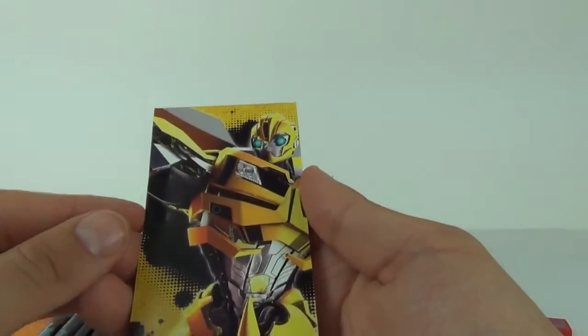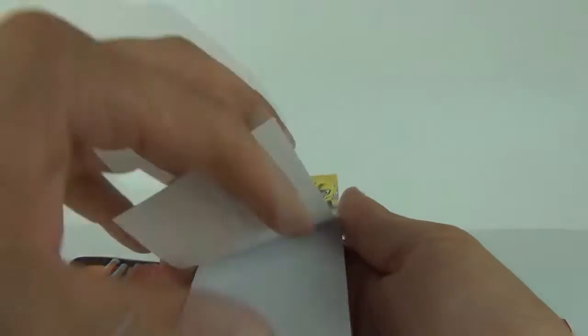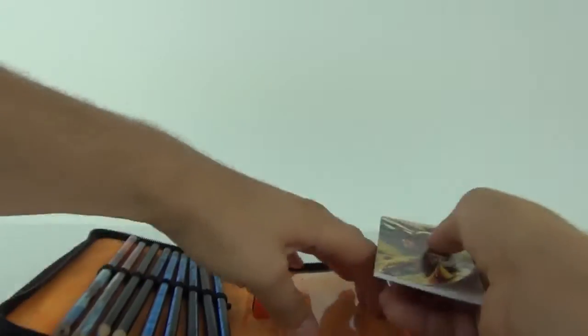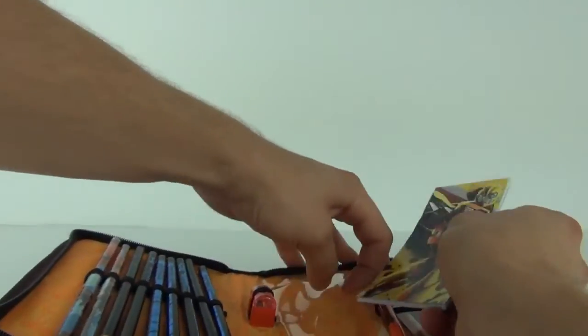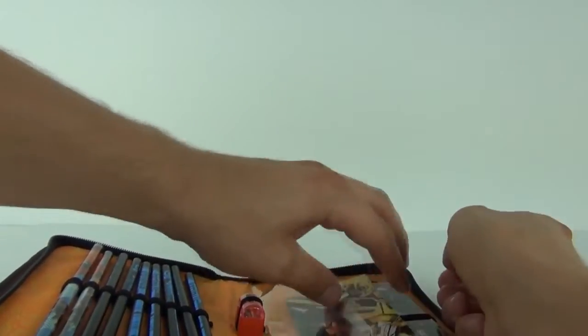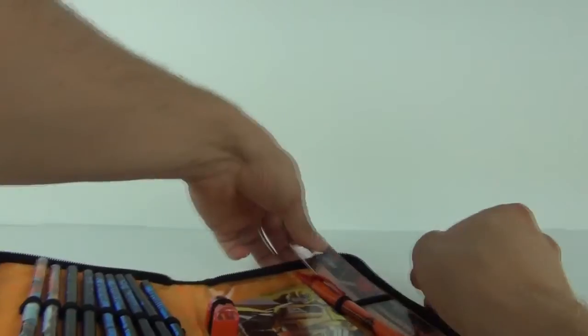We get a notebook as well with the Bumblebee picture on the front, and there are your pages inside that you can use to sketch or just jot down anything your heart desires.